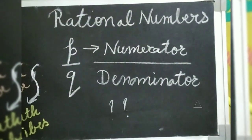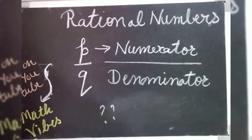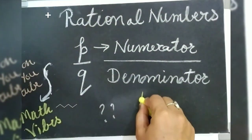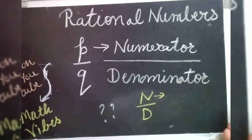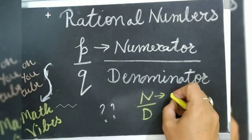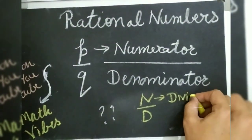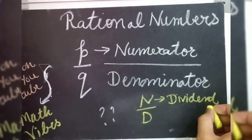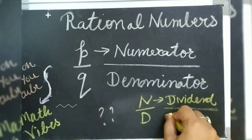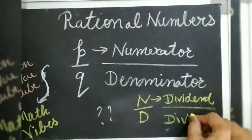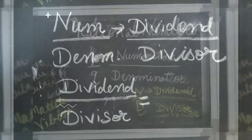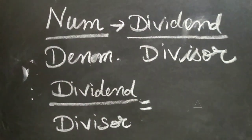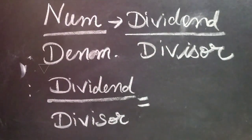Well, numerator and denominator can be written as N over D in short form, where N can be said dividend and D can be said divisor. So we know that numerator over denominator is dividend by divisor, right? So when dividend is divided by divisor...